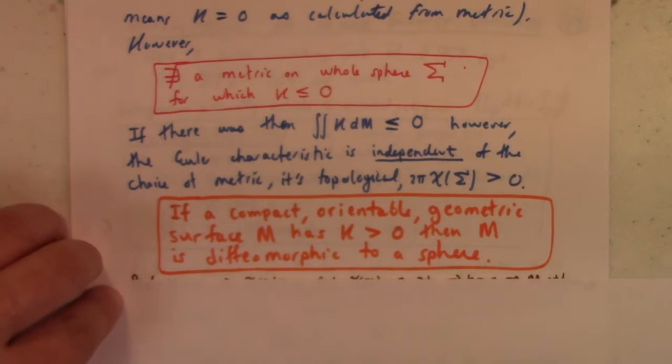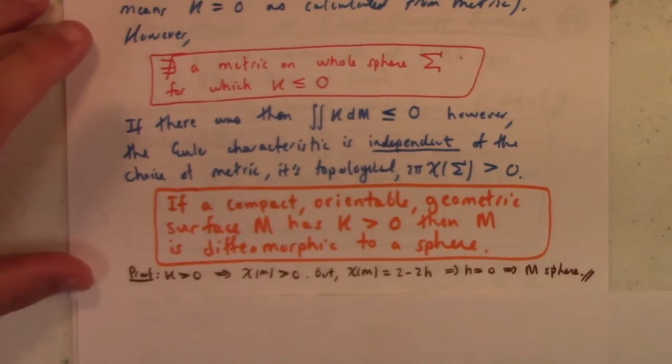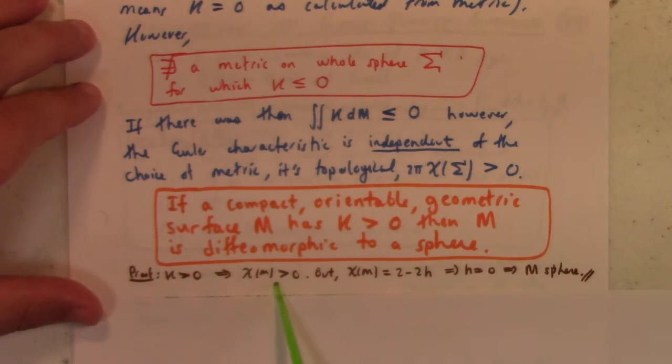If a compact orientable geometric surface M has Gaussian curvature positive, then M is diffeomorphic to a sphere. The proof is simple: if the Gaussian curvature is positive, that implies the Euler characteristic must be positive. The Euler characteristic of any compact orientable geometric surface is related to a sphere with h handles. If 2 minus 2h is positive and h is an integer, that forces us to choose h equals 0, which means Euler characteristic of 2, so it's diffeomorphic to a sphere.